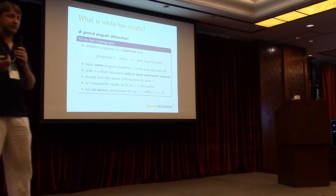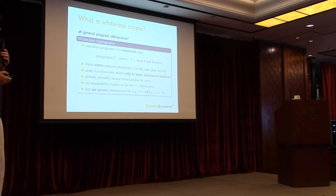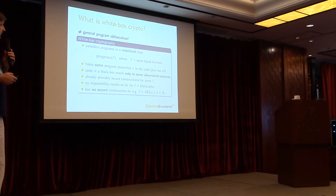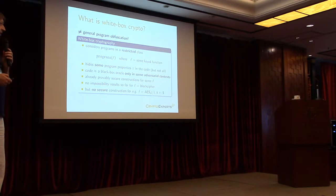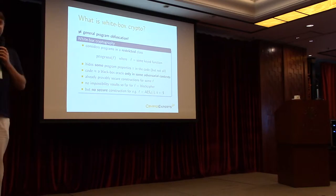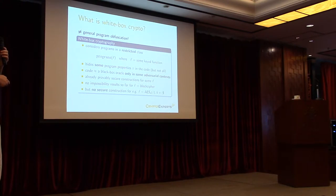If we come back to whitebox crypto, we can see that it's very different in the sense that it's way more restricted. We don't want to hide any general program — we want to consider programs that code a certain function f, where f is basically a cryptographic primitive. What we're looking at is a very restricted class of programs, and also we don't want to hide any property, but just some property — for instance, you want to protect the key.